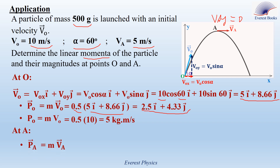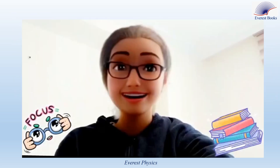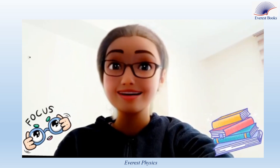At point A, P_A vector equals M times V_A. Since V_A is parallel to the horizontal axis, V_A has no component along the y-axis, so V_A equals 5i. Therefore P_A equals 0.5 times 5i, giving P_A vector equals 2.5i kilogram meters per second. Its magnitude equals 2.5 kilogram meters per second. Focus — this is important.